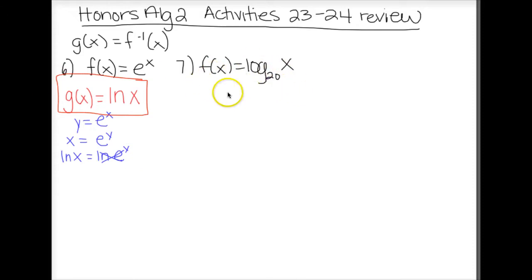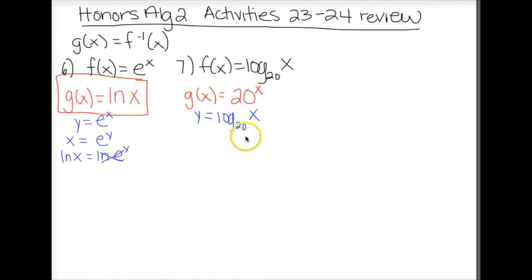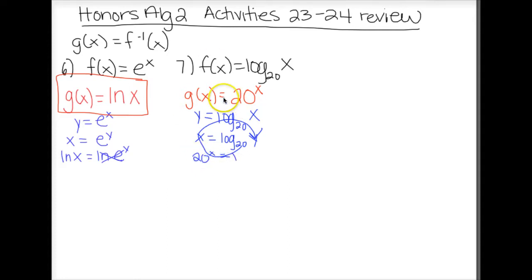Likewise on number 7, this is logarithmic, which means the inverse should be exponential. The base of the logarithm has to match the base of the exponent, so g of x equals 20 to the x. If you're looking for the work, start with y equals log base 20 of x, switch x and y, then use the swoop method to solve. That gives us 20 to the x equals y, which is our function.